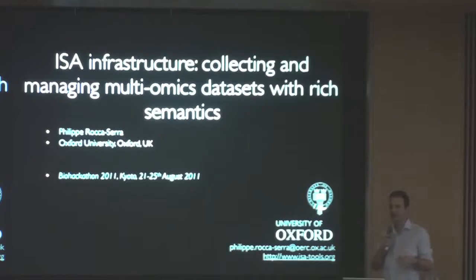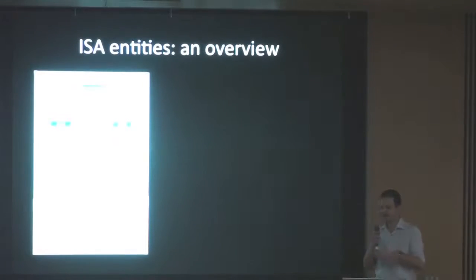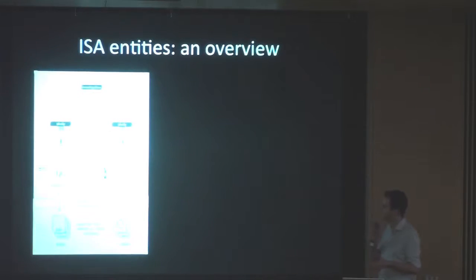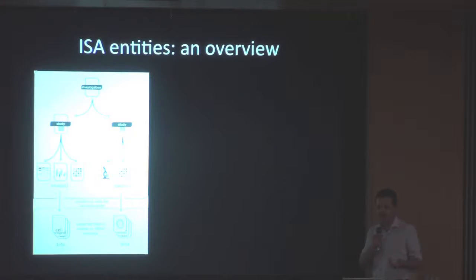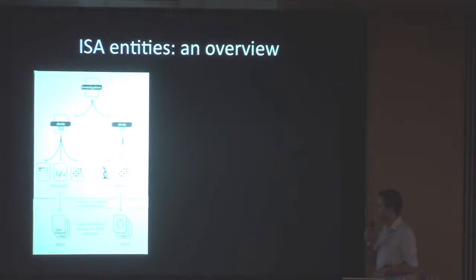What we are trying to do is set a kind of trap for biologists to annotate their experiments a little bit better. I will present a couple of tools we have put together in this project. This is the ISA infrastructure we have set up. The task we were faced with is to cope with experiments dealing with many different techniques, ranging from gene expression profiling using DNA microarrays, to protein identification using mass spectrometry, to metabolite profiling using NMR or mass spectrometry — so a number of assays.